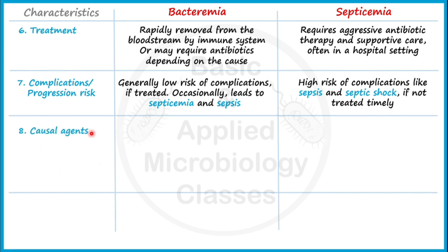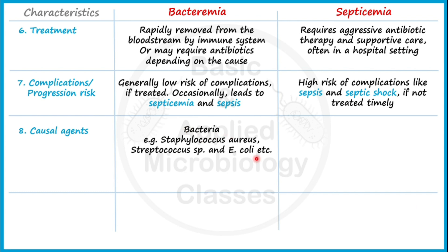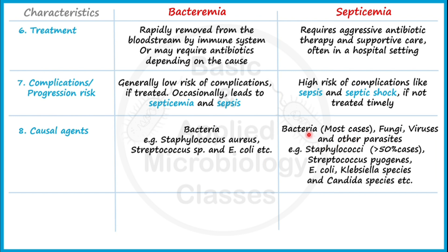The eighth point of difference is causal agents. Bacteremia, as its name indicates, is caused by bacteria — most cases have been associated with Staphylococcus aureus, Staphylococcus species, and E. coli in the blood. Septicemia can result from different pathogens including bacteria, fungi, viruses, and other parasites, but bacteria are responsible in most cases. Among bacteria, more than 50% of cases involve Staphylococci; other bacteria include Streptococcus pyogenes, E. coli, and Klebsiella species. Candida species, a yeast, is also significantly responsible for reported cases of Septicemia.